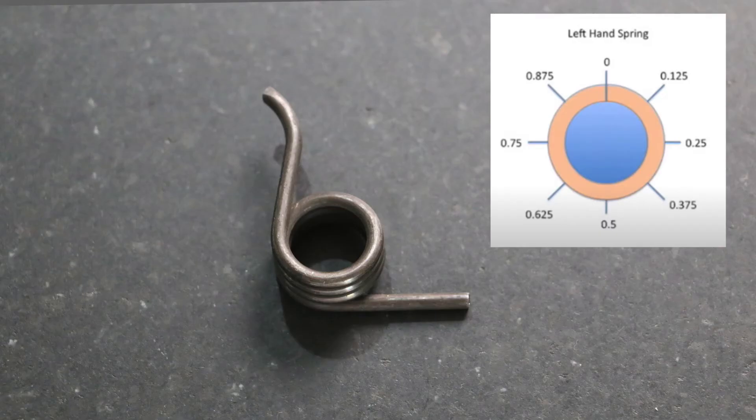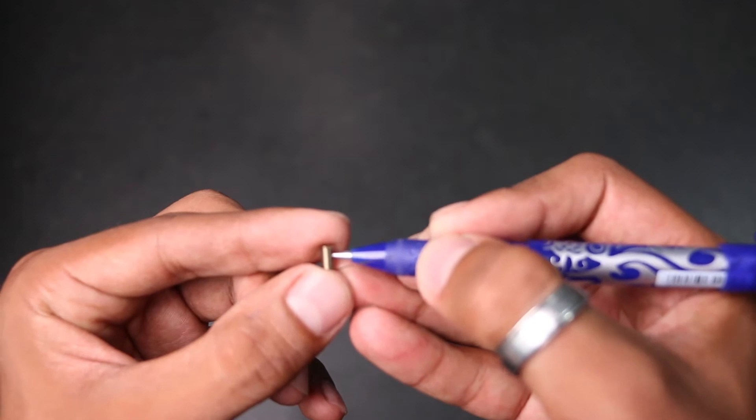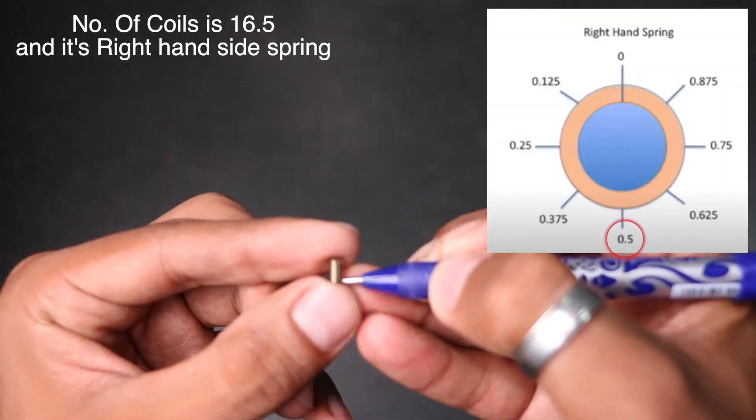To determine the exact measurement of the spring we've designed this diagram to help you. While holding the spring, ensure that the spring is at high noon or zero on the diagram and count all the quarter, half or three quarter coils at the end of your spring. So number of coils in this particular spring is 16.5.